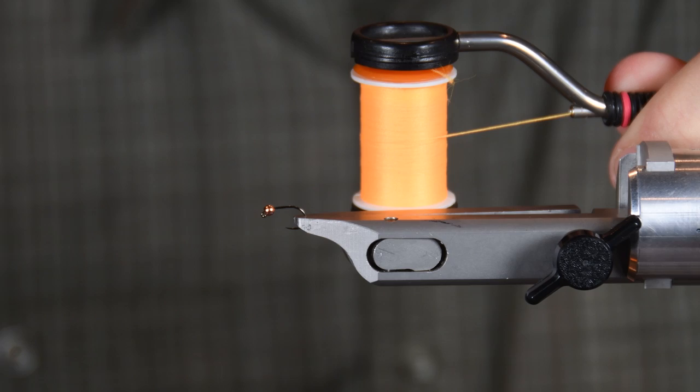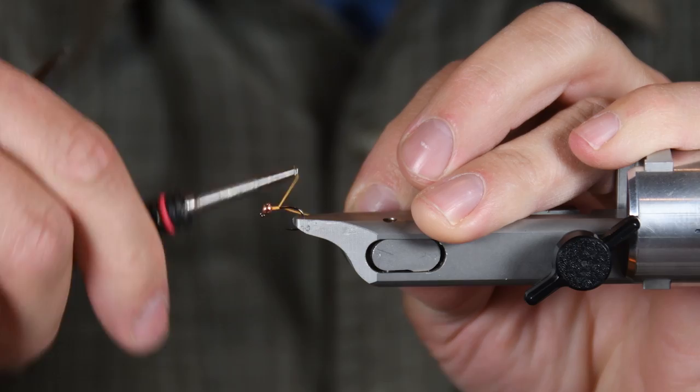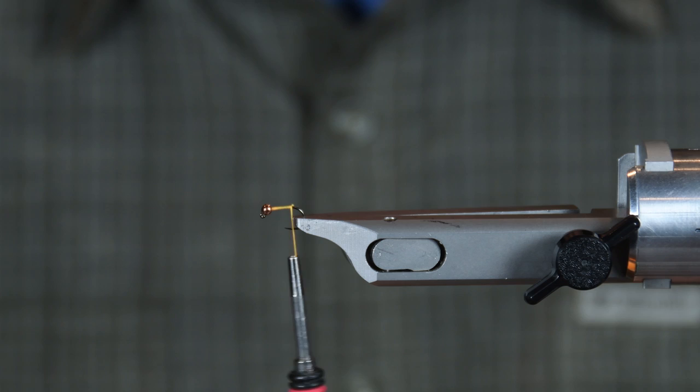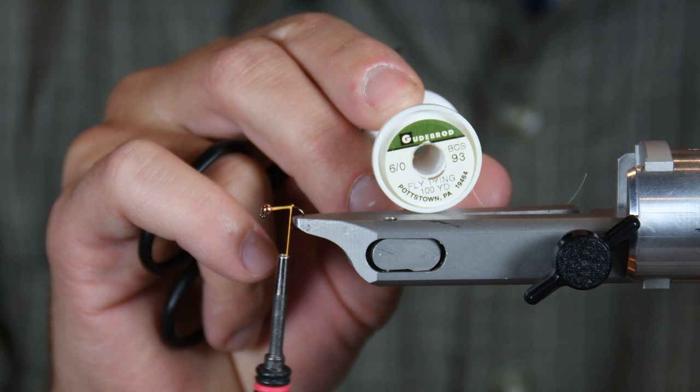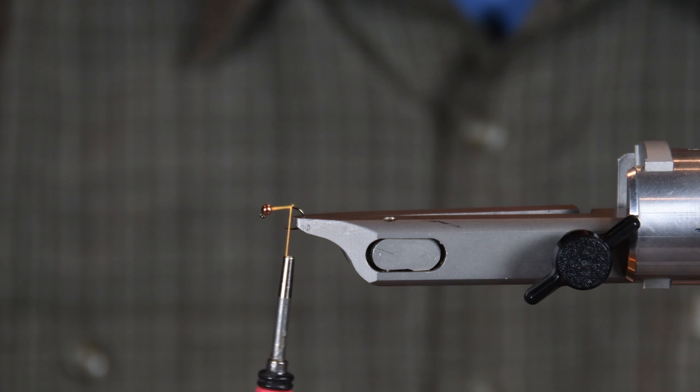Go ahead and start your fly, wrap it all the way back, snip your excess. I'm going to be using six eye mono thread for the rib, or sometimes I'll even use 6x. If you got an old spool of 6x laying around, you can definitely use that for the rib.